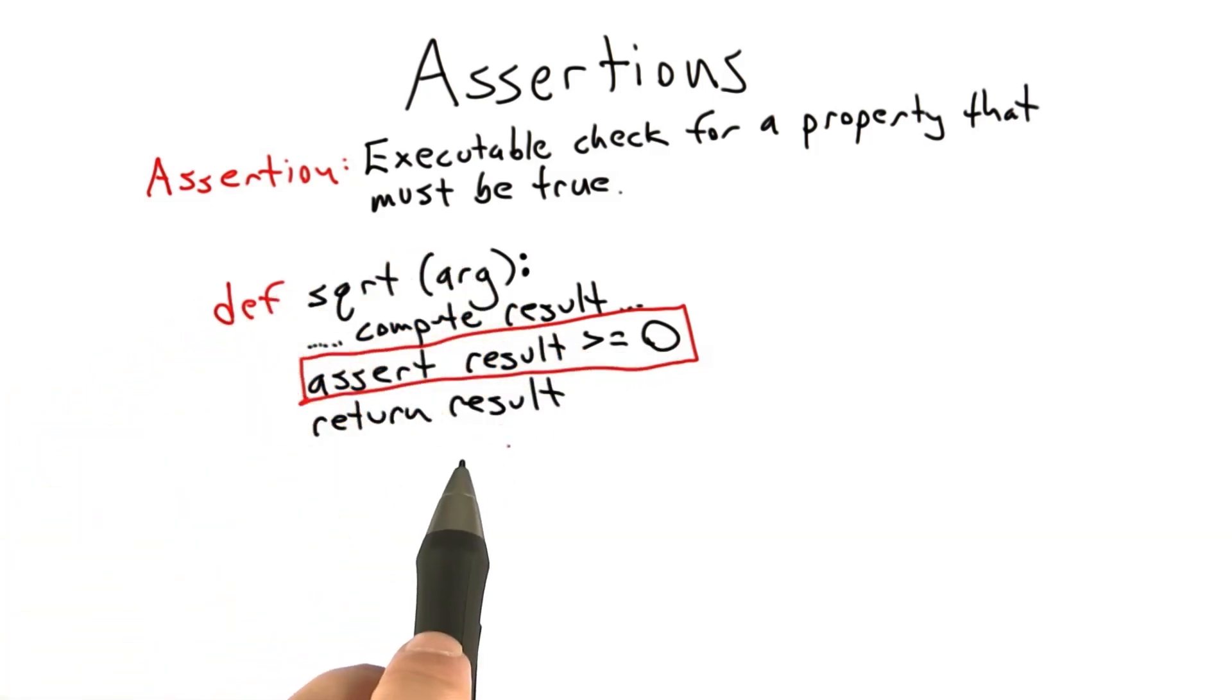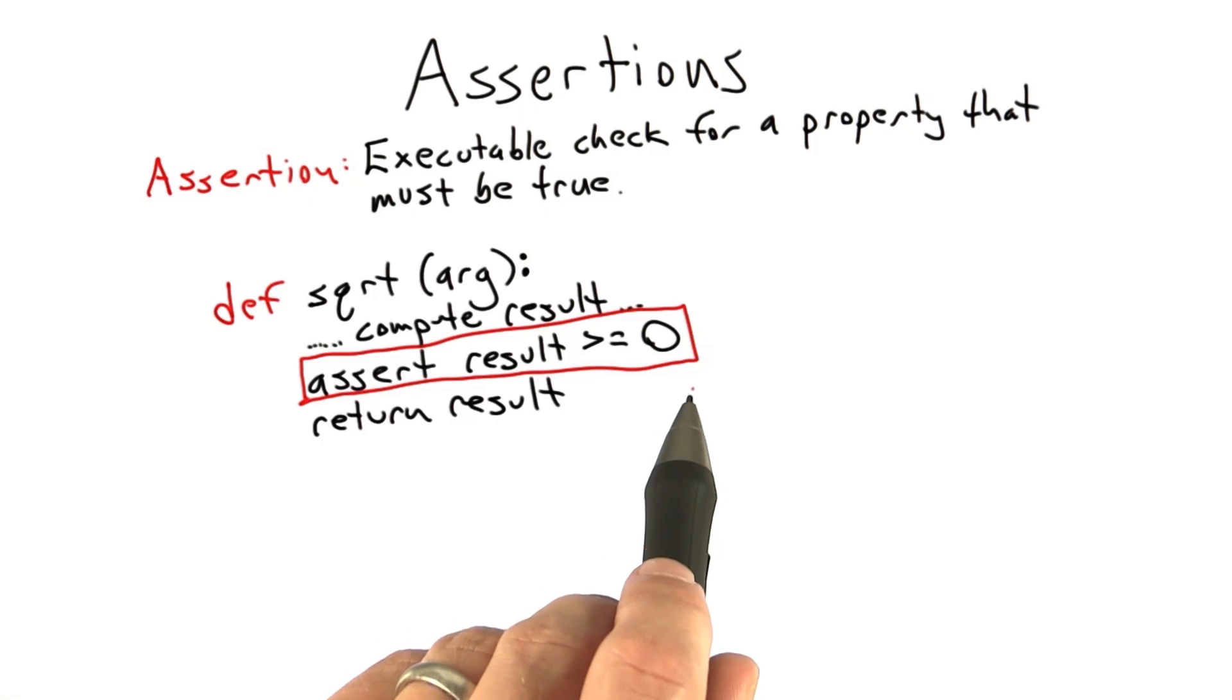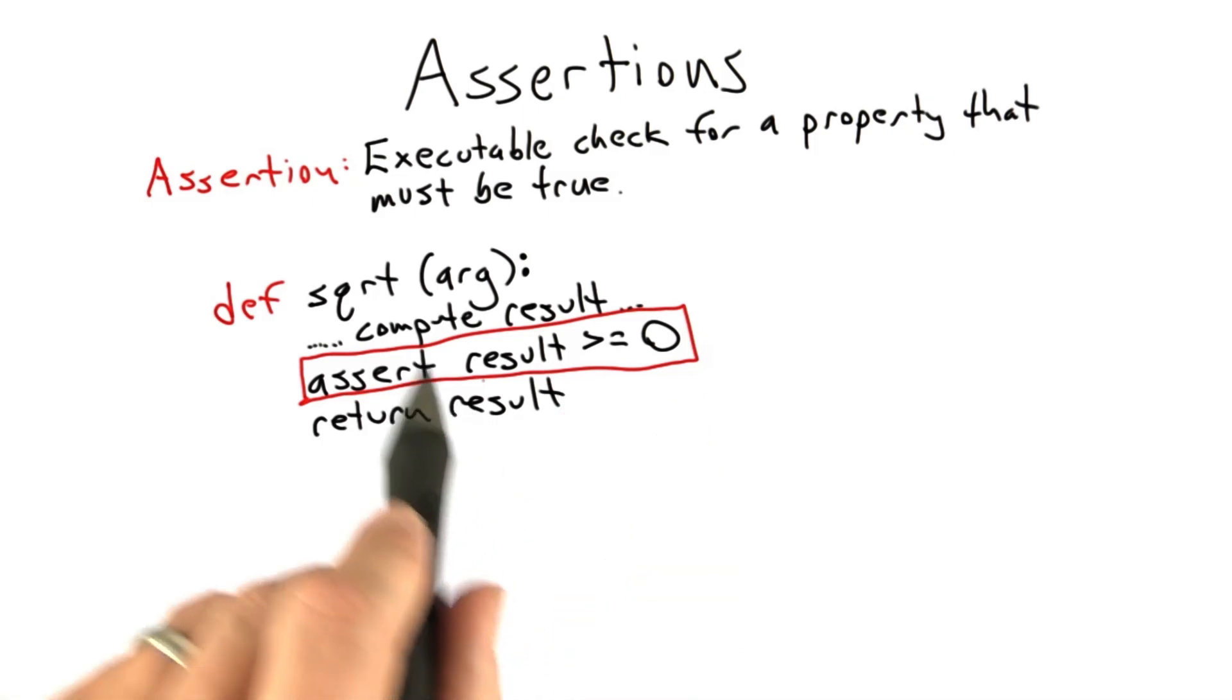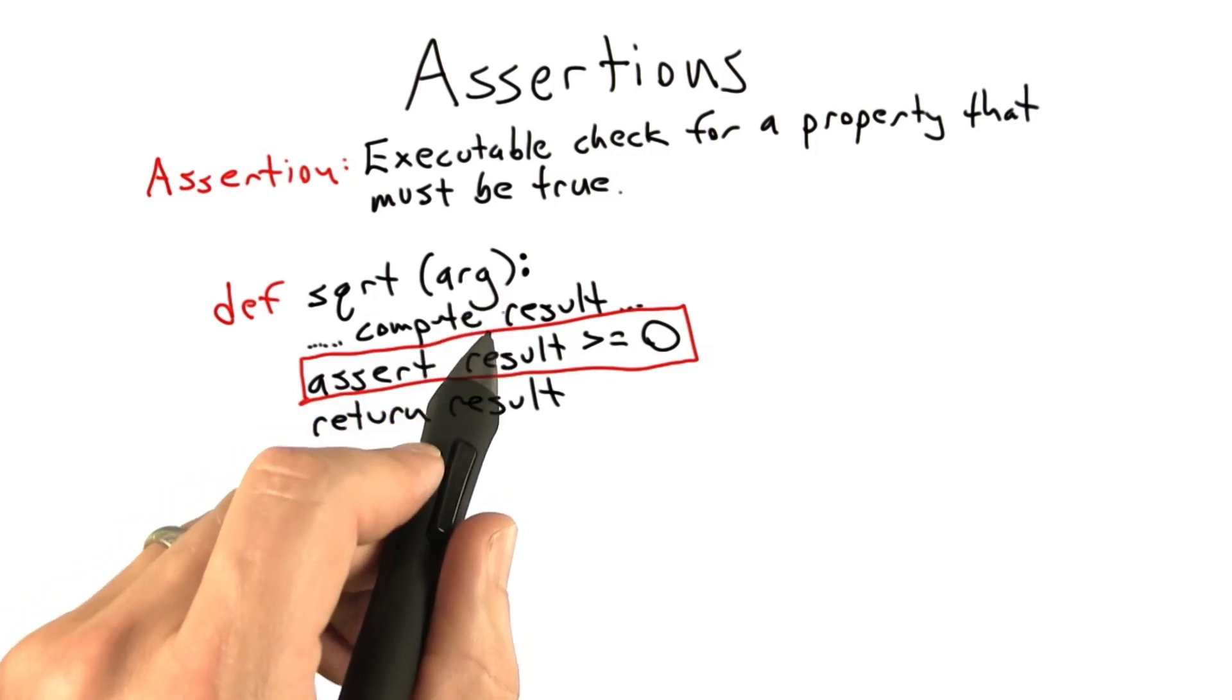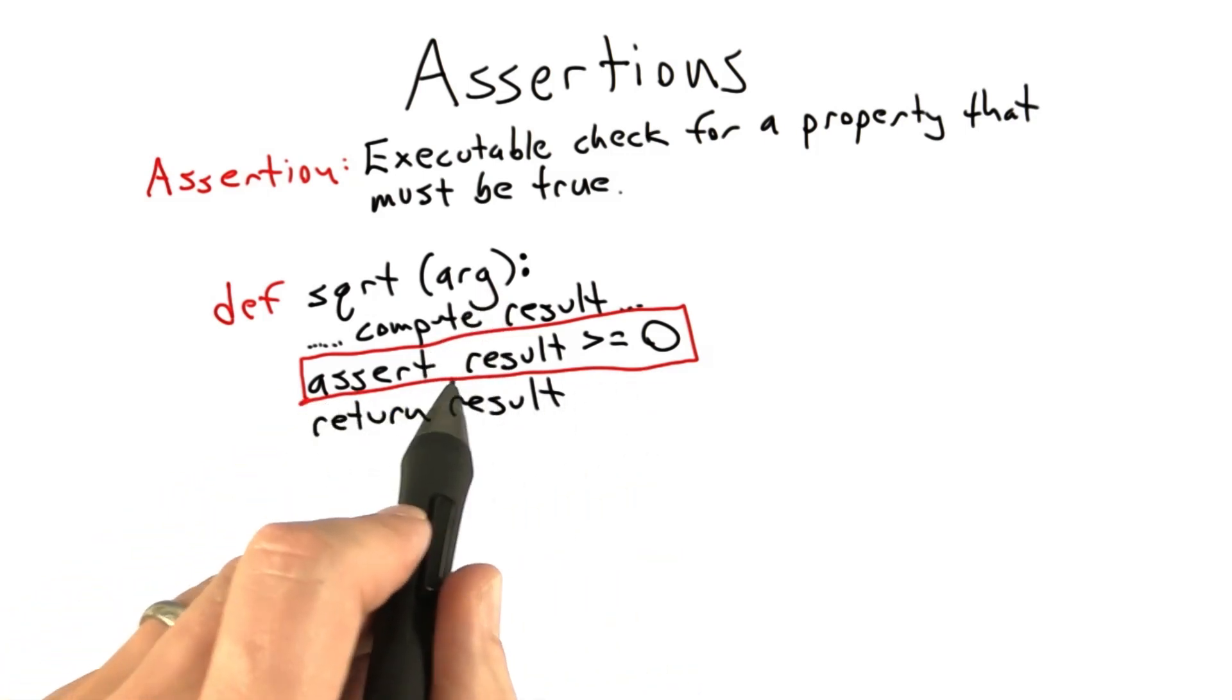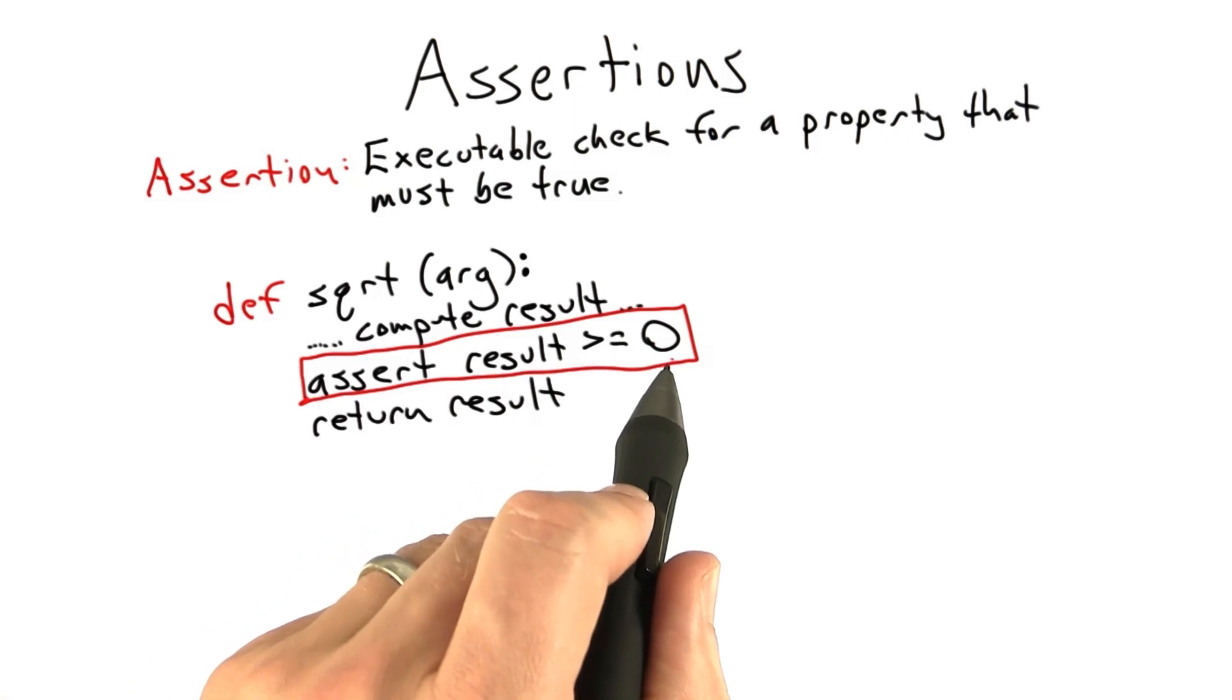And so why did we assert that the square root result is greater than or equal to 0? Because we know that by definition, our square root function is returning the positive square root of its argument. And so at this point in the code, we know that we must have computed a positive number. So it's good to go ahead and assert that.